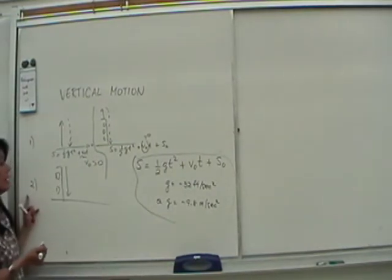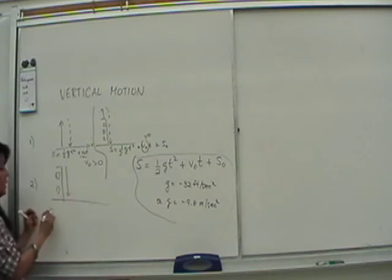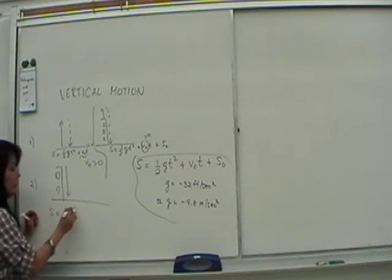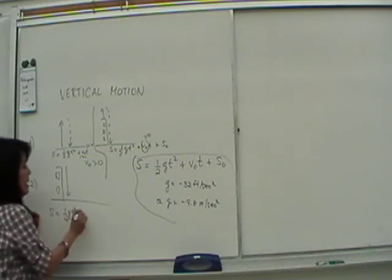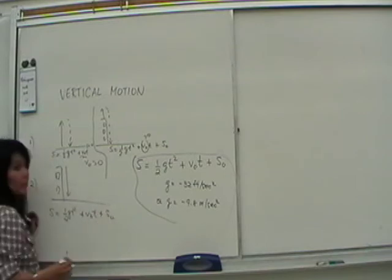Now for the second problem where we had the stone, just falling, so we ended up with the equation s equals 1 half g t squared, plus V sub 0 t plus s sub 0.